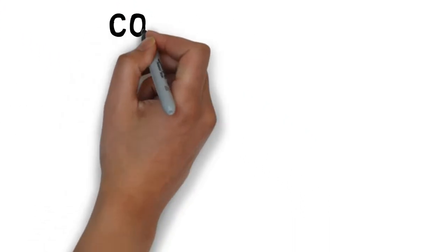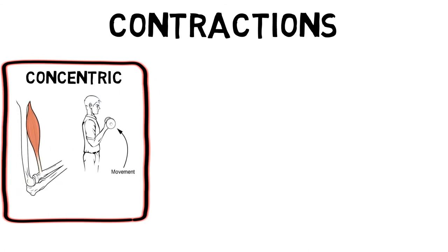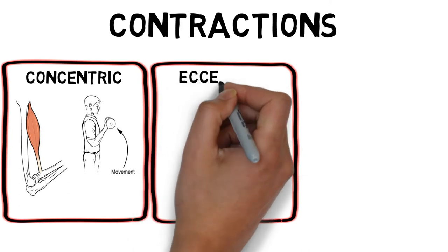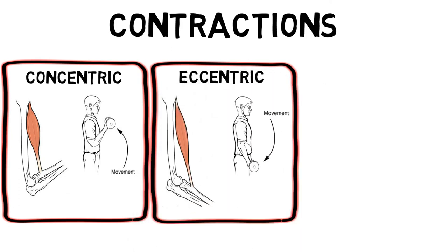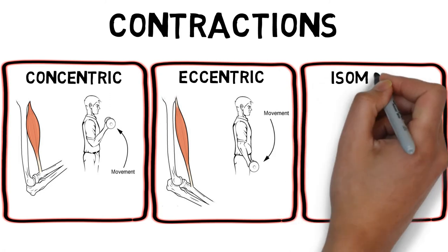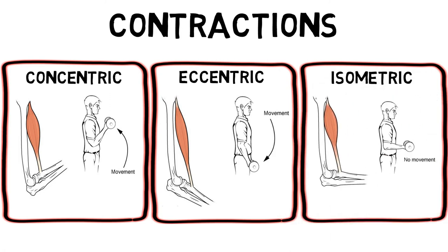Muscles can produce three different types of contractions. Concentric contractions occur when the muscle shortens under force. Eccentric contractions occur when the muscle lengthens. And isometric contractions, which are static contractions without any movement, and produce force without any change in joint angle.